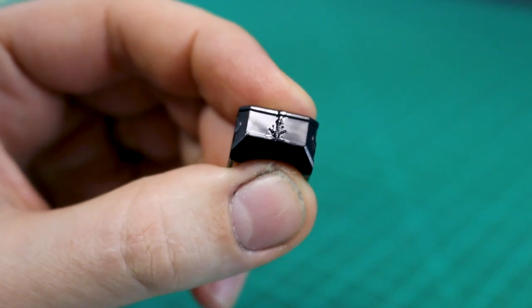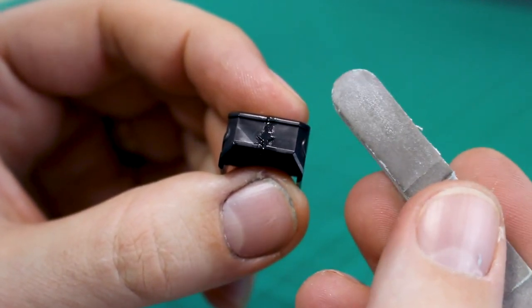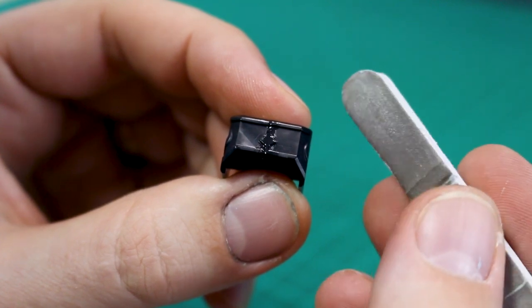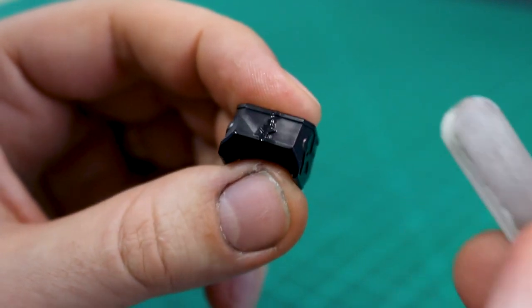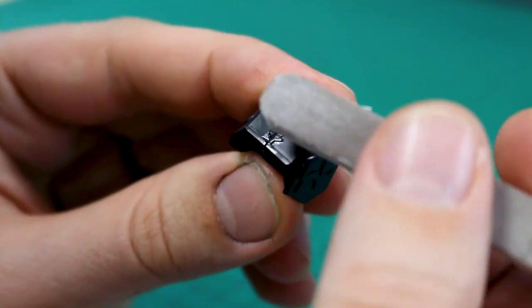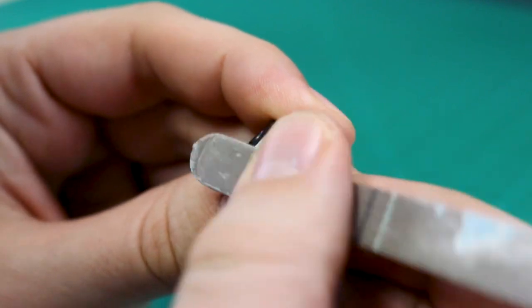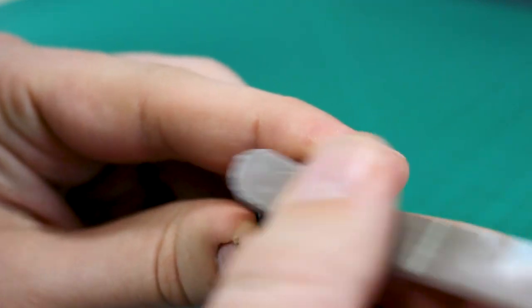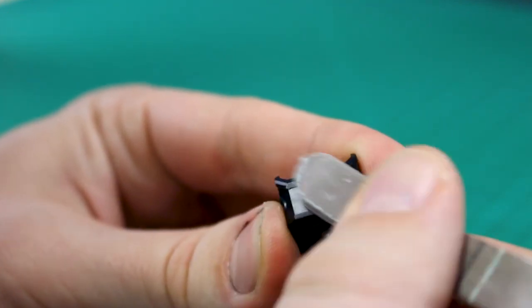Once that's had some time to dry, I'm just going to take a sanding stick here. This was originally a 600 grit sanding stick, but as you can see, it's pretty worn. So it's probably more like a thousand now at this point. Basically, you just need something that's going to get the job done for you. I'm just going to sand this a little bit. It's black, so it's kind of hard to see how good or bad it is just right off the bat.